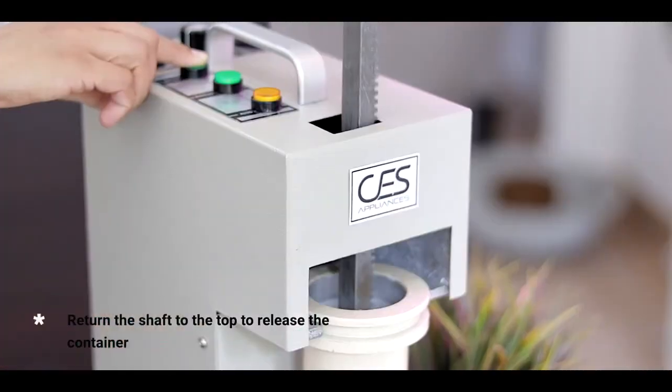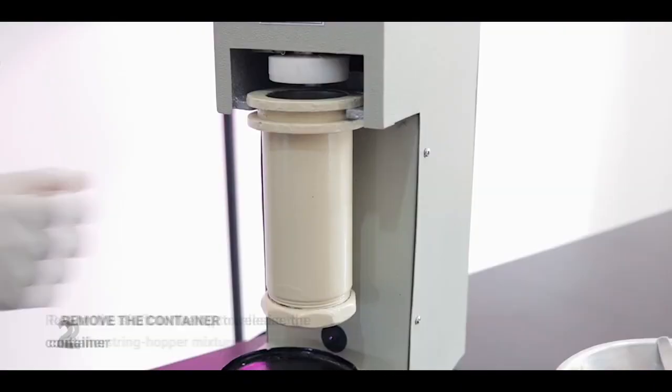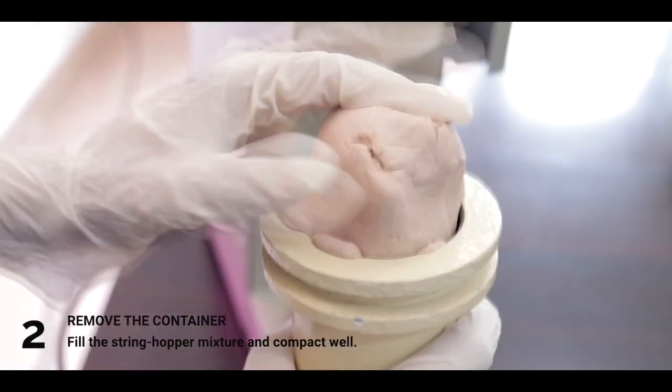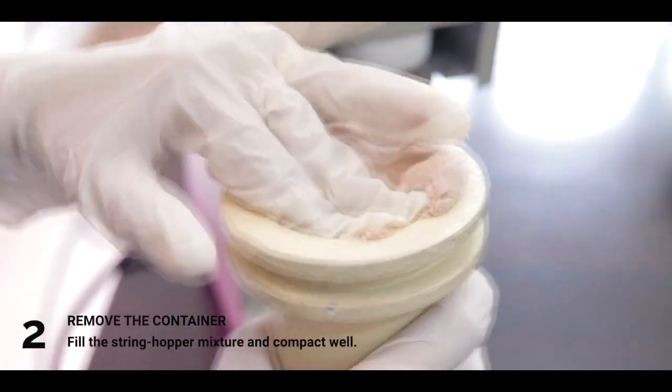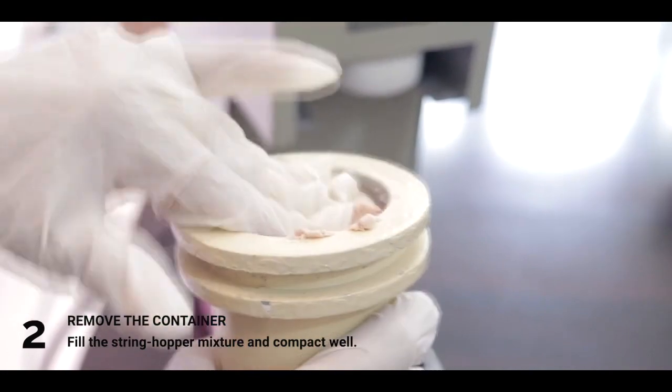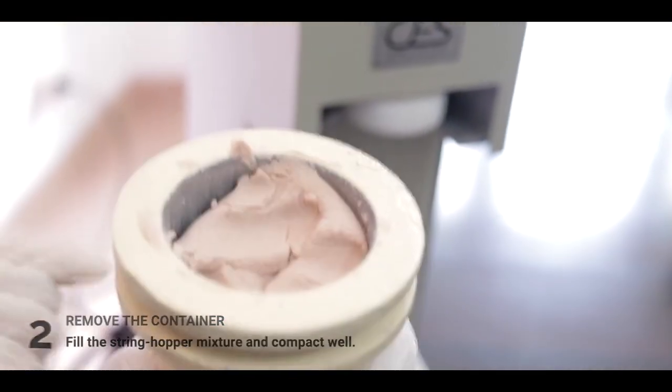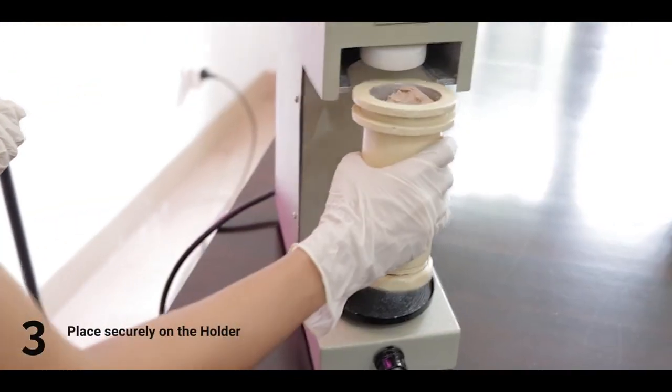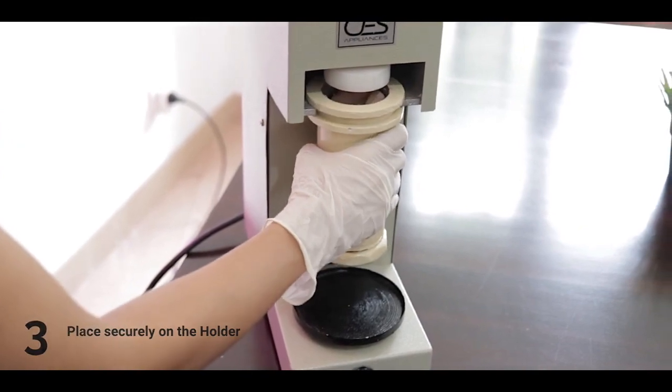Release the container and fill it with your prepared string hopper mixture and compact well. Place securely on the holder, aligning properly with the pressing disc.